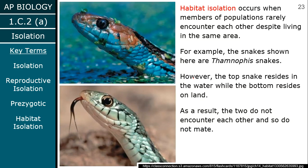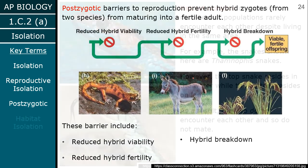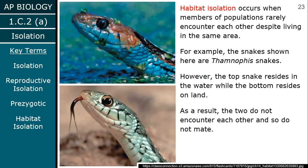Habitat isolation is when members of populations rarely encounter each other despite living in the same area. For example, we have two different snake populations — one lives in the water and one lives on land in the same geographic region. They might be feet from each other, but they don't encounter each other and don't mate. There's no gene flow because one is in the water and one is on land, and they won't leave their habitat.